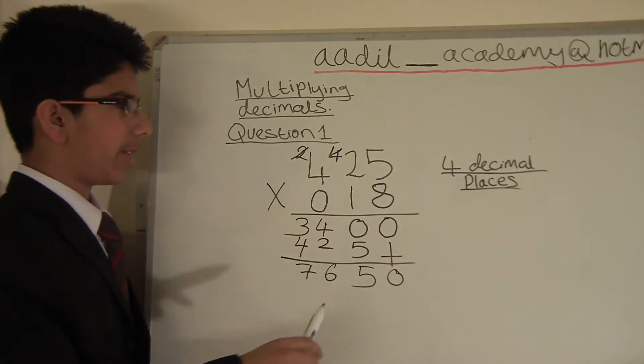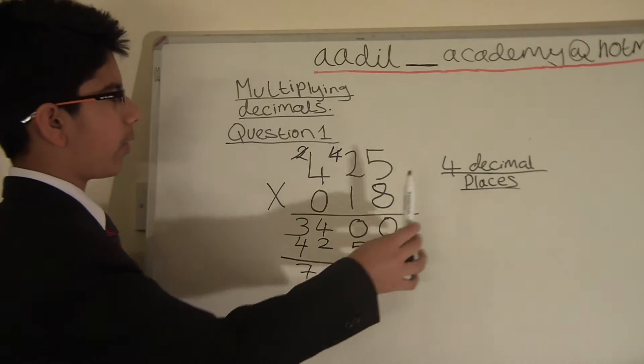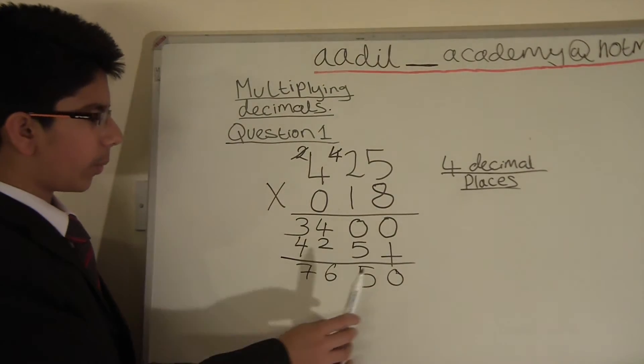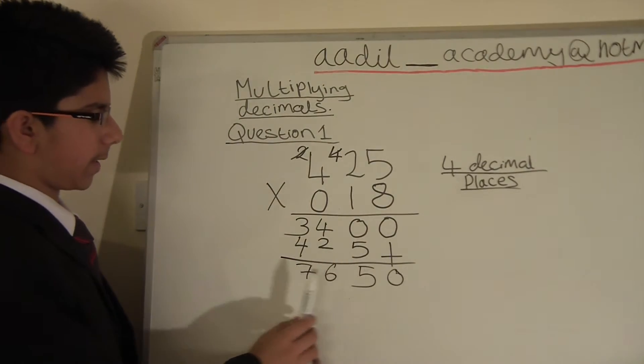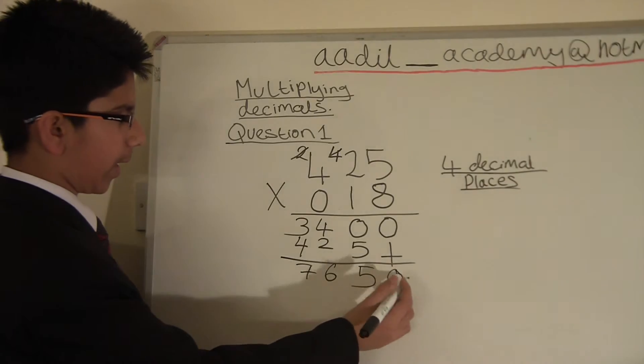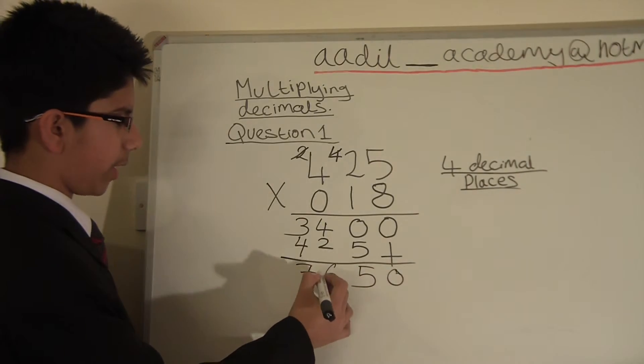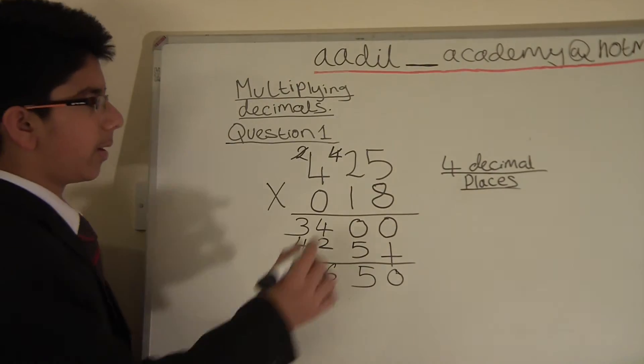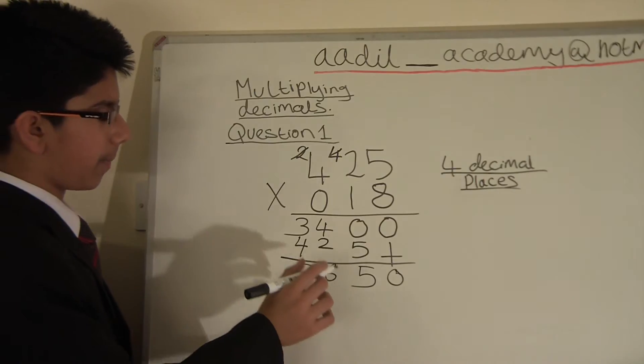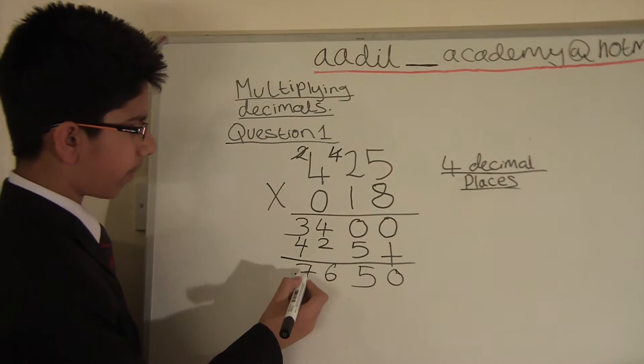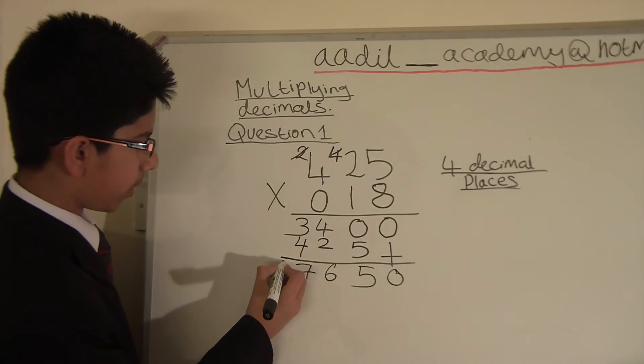Now we come back to the decimal places part. We wrote 4 decimal places. We have to put those 4 decimal places into this answer we have. So we count 1, 2, 3, 4. That's where the decimal point goes. Because it's 4 decimal places. If there's a point after the beginning number, we just put a 0 there.